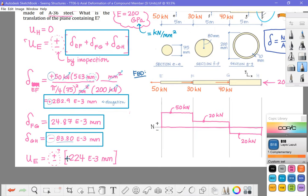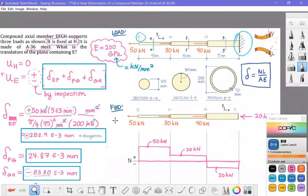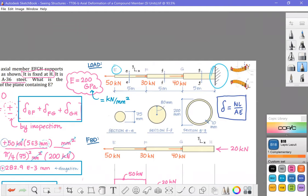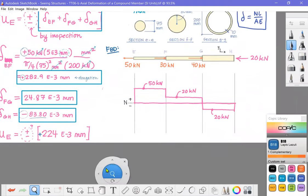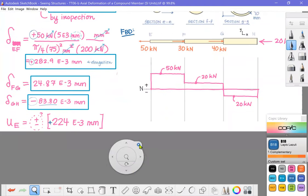If the member is overall elongating, and if it is anchored at the right, the only place for it to grow is to the left. So we're anchored at the right, that elongation will send plane E to the left.